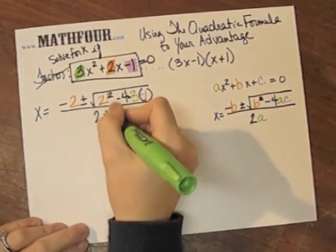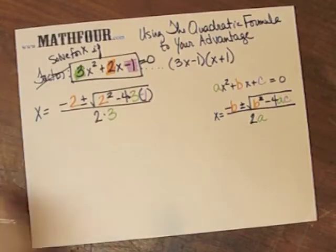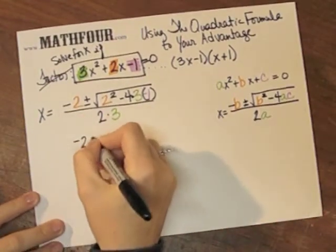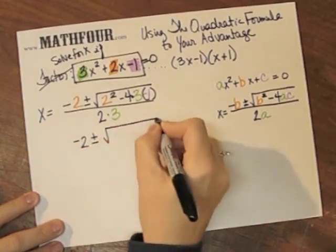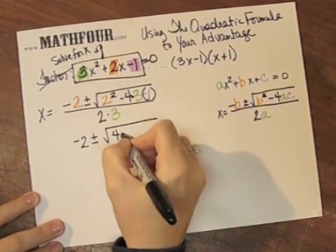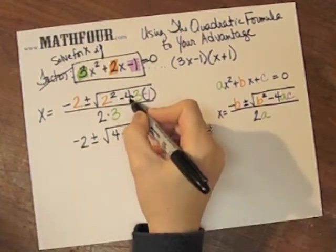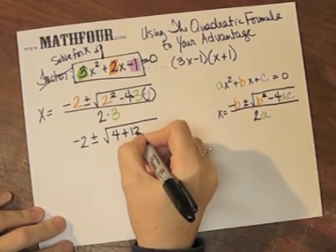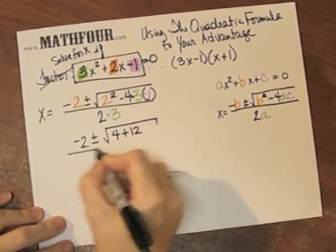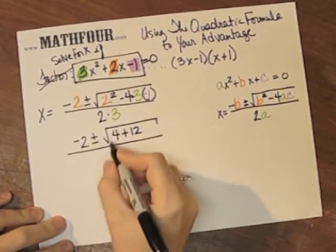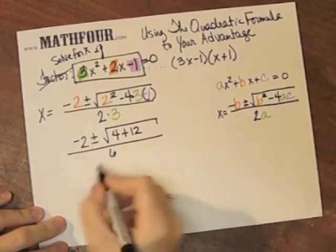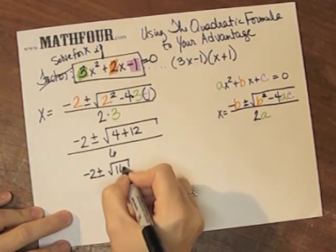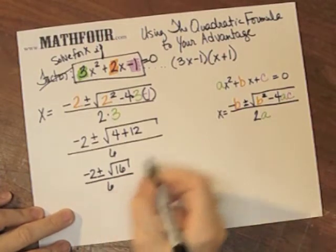The denominator is 2 times 3. So now I can do the arithmetic: negative 2 plus or minus the square root of 4 minus 4 times 3 is 12, times negative 1, so that's plus 12. Which gives me negative 2 plus or minus the square root of 16. I love problems like this.